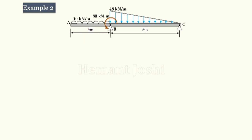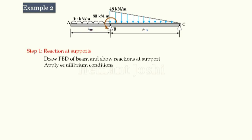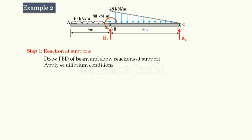The first part is to find out reactions. Draw the FBD — showing reactions at B and C. Since there is no horizontal load, there is no horizontal reaction. Even if present, we are not considering horizontal because it is axial effect, which we do not consider in shear force and bending moment diagrams. So I am showing reactions RB and RC and applying the first equilibrium condition of moment.